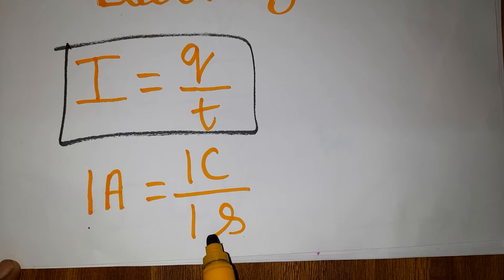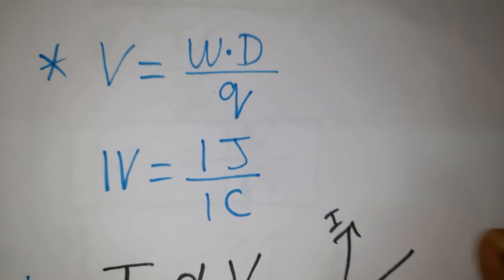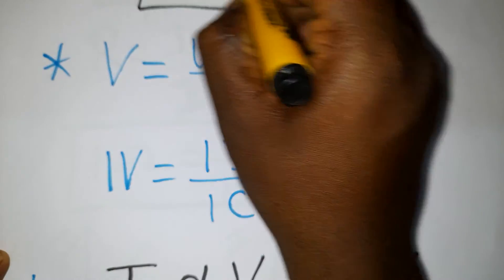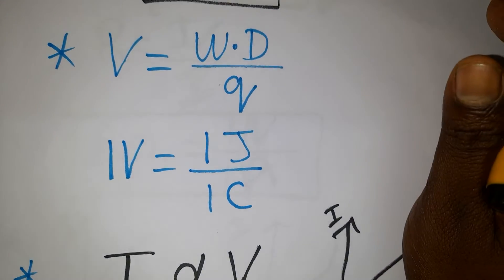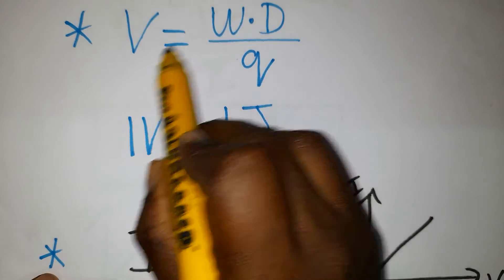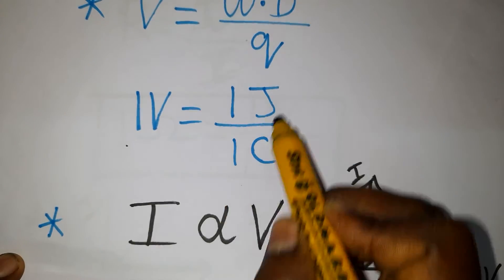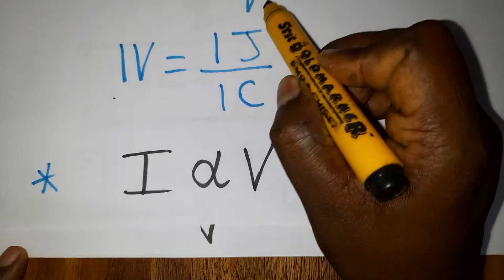The next formula is Q = NE, where charge is represented as N number of electrons. Voltage equals work done per unit charge. One volt equals one joule per coulomb. The unit of charge is coulombs and the unit of work done is joules.